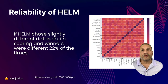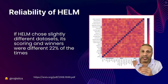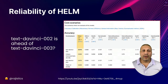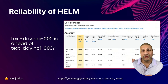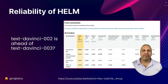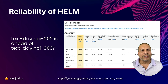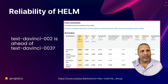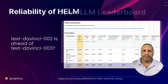If you dig into HELM you'll see they picked a couple of datasets for different scenarios, but changing those datasets slightly can change the winners in the scoring. A great example: the newer OpenAI model is ranked behind the older model. I don't think they would release a model worse than a previous one, which makes me question how useful these benchmarks are.